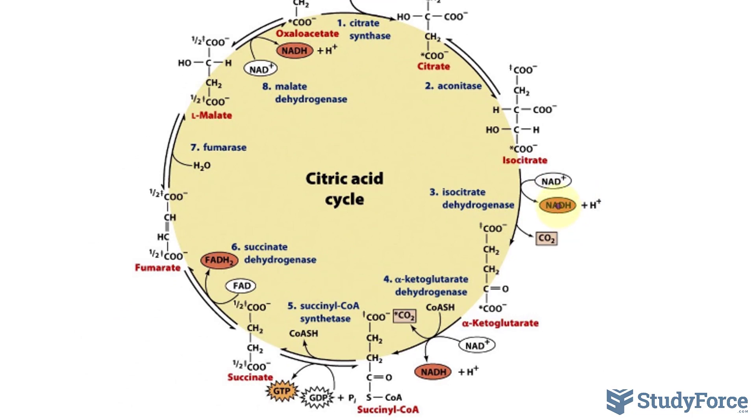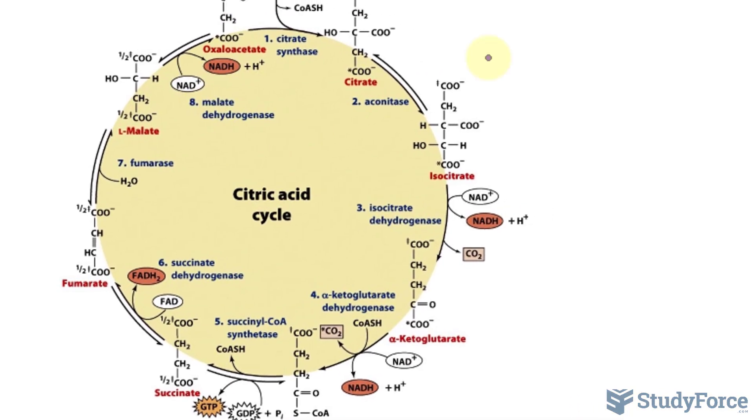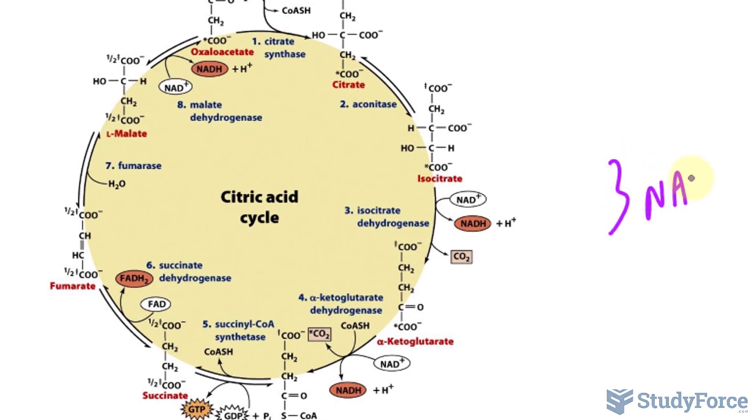From here, we have one NADH in this stage formed, another one here, and a third one here. So three NADH, that's in one spin, and one FADH2 molecule.